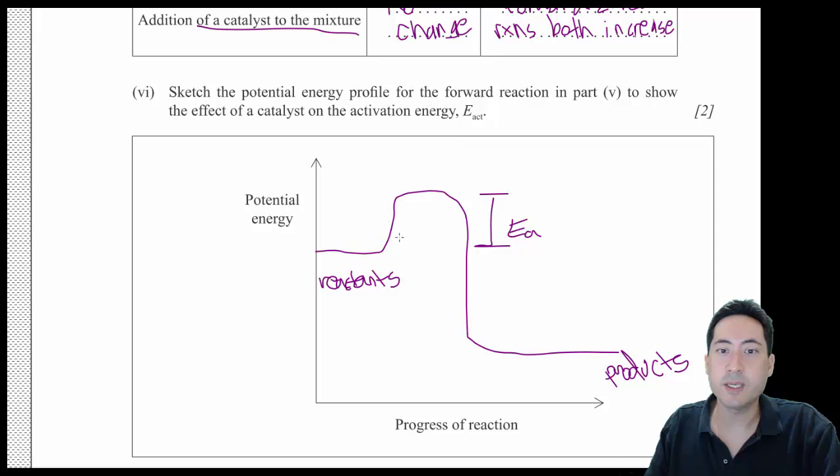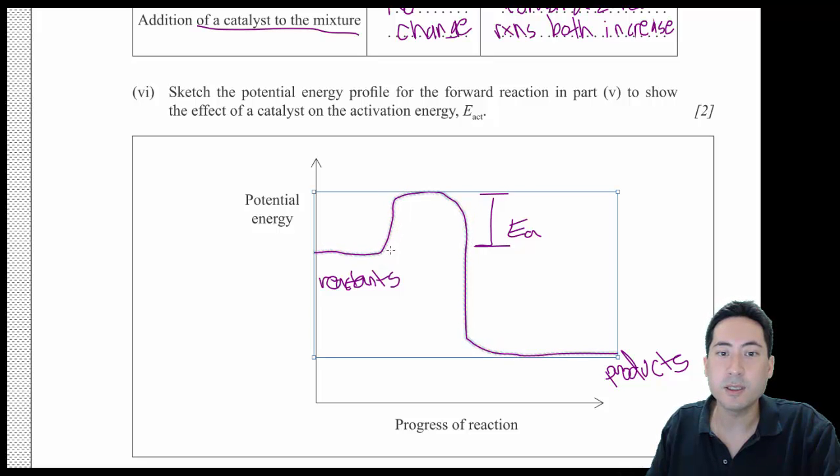And then when you add a catalyst, you're just making the reaction go faster so the forward and reverse reactions are going to improve. And so what you can just do is put just a line in here going down like that. And that there, putting EA with the catalyst.